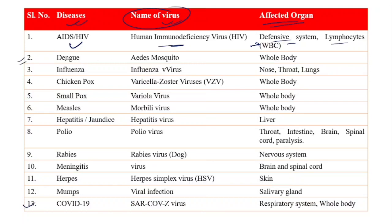Number two: Dengue. This is a very popular disease caused because of the Aedes mosquito virus, and it attacks the whole body. Number three: Influenza is caused because of Influenza A, B, or C viruses. You have to remember it is caused by a virus, and in the initial stage it attacks the nose, throat, and lungs.